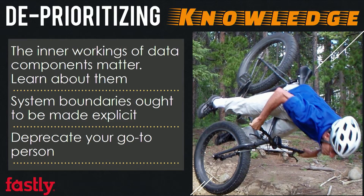Another corollary is deprioritizing knowledge. The way that your system is constructed and its dependencies ought to be explicit. Whenever your system depends on something like a database, knowing a little bit about that database is really important. You can't just grab Mongo out of the bag and decide it's going to be your primary data store without knowing the operational inner workings. Also, having one go-to person for a system is slightly dangerous. You should deprecate that dependency by building out playbooks and documentation, and bring someone else up to that first tier.